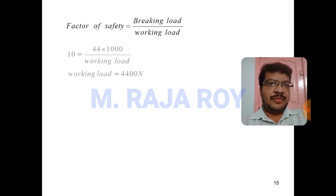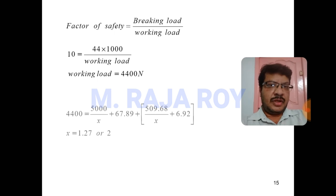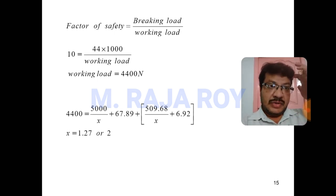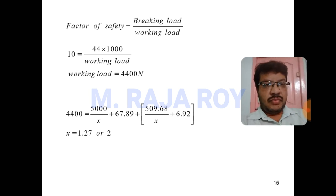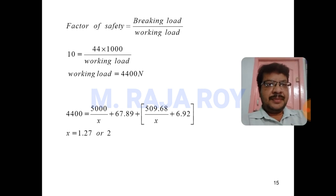From the braking load and factor of safety we get the working load: working load = 44,000 / 10 = 4400 N. Equating this to the total working load expression and solving for X gives X = 1.27, which rounds up to 2 wire ropes. So the first question is answered.